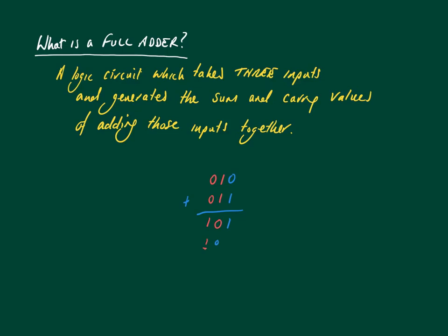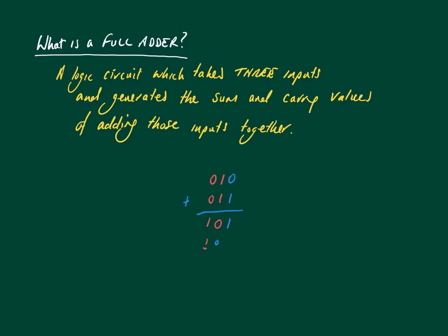So let's look at how this might look in a trace table. In the full adder trace table we've got our A and B inputs as normal, but we also have the carry from anything previously. From that we're going to generate the sum and then the new carry for the next column.